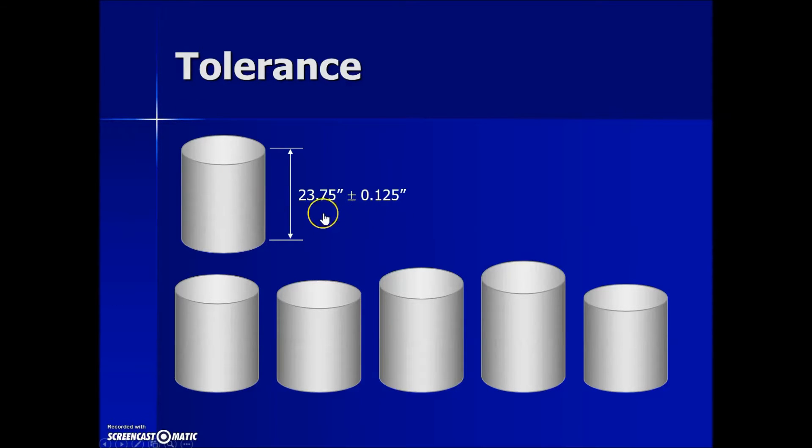In the tolerance listed here, the first number is called the standard measurement. It's ideally what we're looking for. The number following the plus-minus sign tells you how much the item can vary in measurement from the standard value.